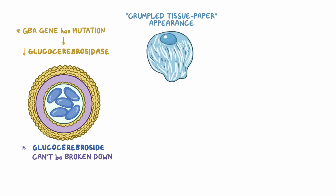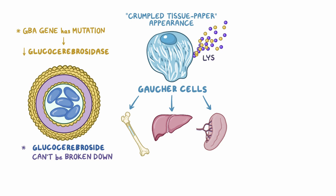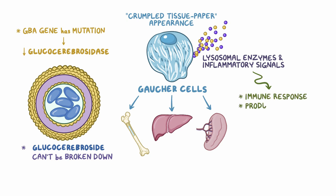These transformed macrophages are called Gaucher cells, and they accumulate in multiple organs and tissues, including the bone marrow, liver, and spleen. Gaucher cells and other nearby macrophages secrete damaging lysosomal enzymes and inflammatory signals into the surrounding area. This causes an immune response and production of scar tissue, resulting in many characteristic signs and symptoms.